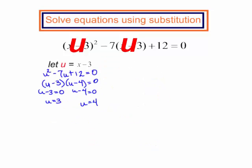So wherever I see u I will plug back in x minus 3. So if u is equal to 3 that means x minus 3 is going to equal 3. If u is equal to 4 that means x minus 3 is equal to 4. Solve both of these equations. x will equal 6 or x will equal 7.